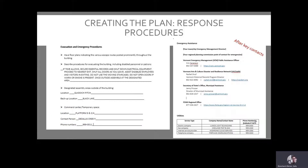In the second example, you can see a list of several Vermont contacts that can help in an emergency, including Vermont Emergency Management, the Vermont Arts and Culture Disaster and Resilience Network (VACDARN), the Secretary of State, and Vermont's regional office with FEMA. This is also a place to put the contact information of your local emergency management director and regional planning commission, your utility providers, and insurance agents or providers. These are important for your recovery but should be contacted after your key contacts identified in the first section.